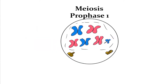Something different in meiosis compared to mitosis is that meiosis actually has two cycles. Mitosis has one cycle and you end up with two cells. Meiosis has two cycles, and the result is four cells at the end. As we go through each phase, keep in mind which cycle we're in — the first or the second.